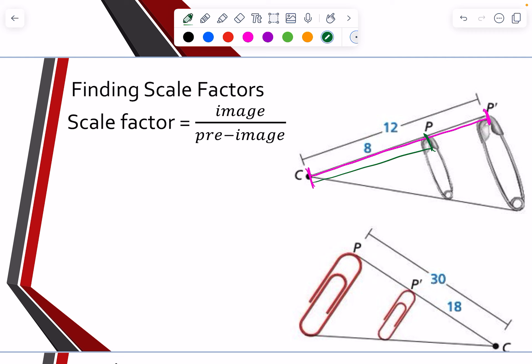So the scale factor has to be bigger than one, because it is causing that image, that pre-image to get larger. So if we want the scale factor, K is going to equal the image, the image would be 12 over the pre-image 8, we simplify it, both of them can be divided by 4, so we would end up with a scale factor of 3 halves.